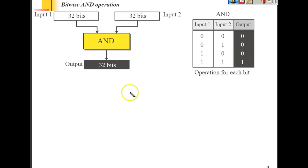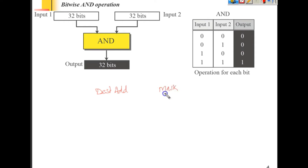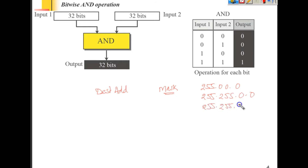The router performs the AND operation with the destination address using the mask. For classful addressing, the mask is already defined: for class A we have 255.0.0.0, for class B we have 255.255.0.0, and for class C we have 255.255.255.0. So the mask is already defined for each class.